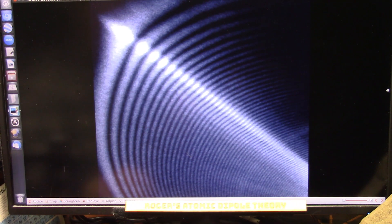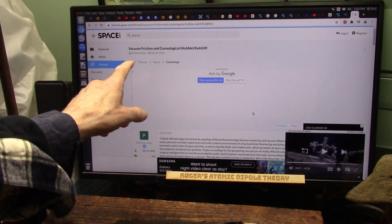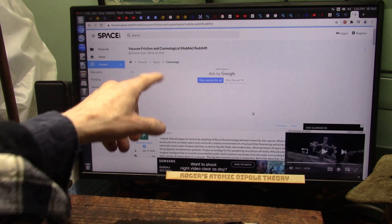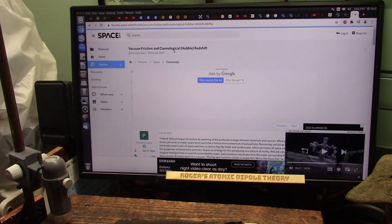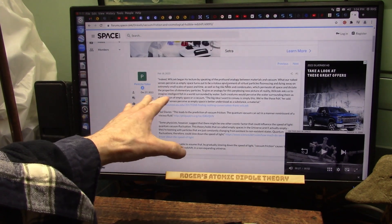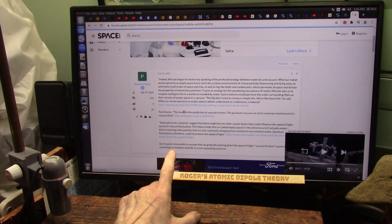And they're really holding on tight to this belief that Hubble is able to measure these distances. It's just not. They're finally starting to question it. This just came out a couple days ago. Space, vacuum friction, cosmological Hubble redshift. And they're saying, well, what about this stuff in space?